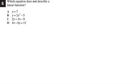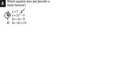Number 6: which equation does not describe a linear function? Right away, look for exponents. Letter B has an exponent, making it a quadratic equation that won't produce a straight line. A, C, and D can all be written in slope-intercept form, but B cannot — so B is the answer.